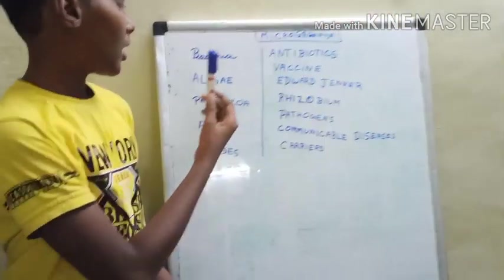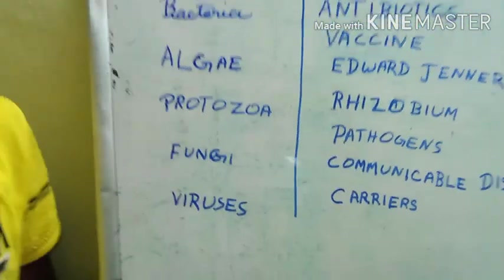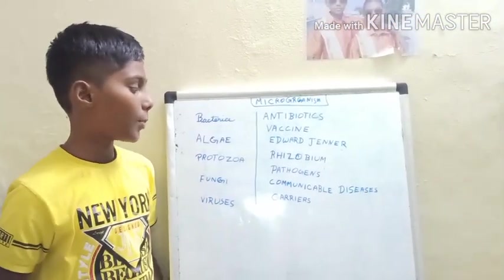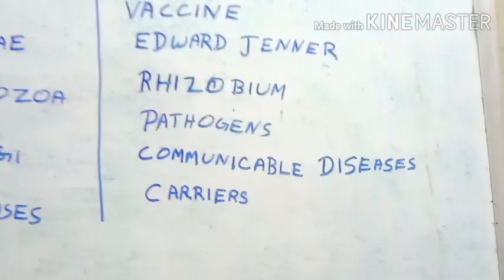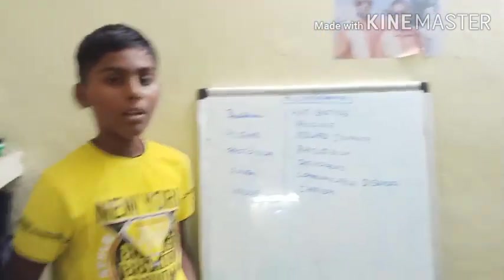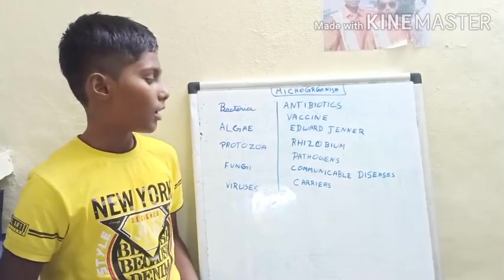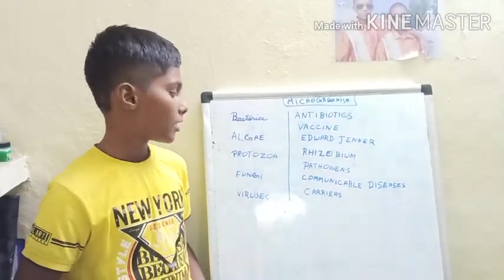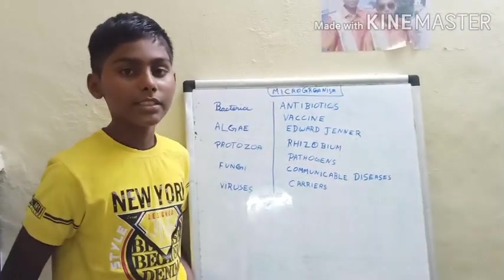Viruses and some kinds of bacteria also cause diseases like tuberculosis. Such disease-causing microorganisms are called pathogens. These diseases can spread from one human to another through air, water, and also physical contact. Such diseases are known as communicable diseases.